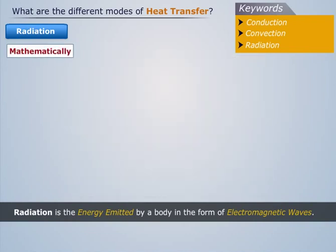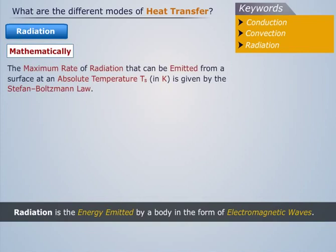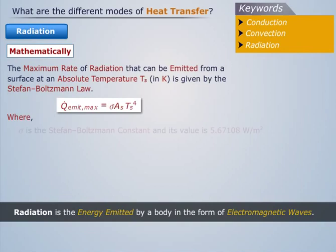Mathematically, the maximum rate of radiation that can be emitted from a surface at an absolute temperature Ts in Kelvin is given by the Stefan-Boltzmann law. It is represented as Qemit,max = σAsTs⁴, where sigma is the Stefan-Boltzmann constant and its value is 5.67108 watts per meter square.